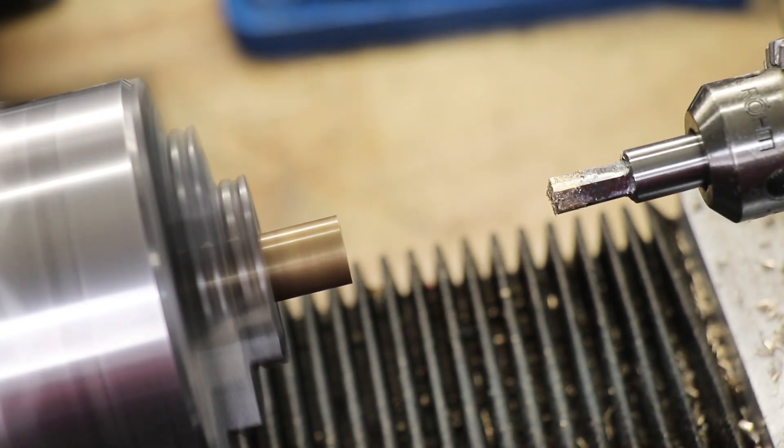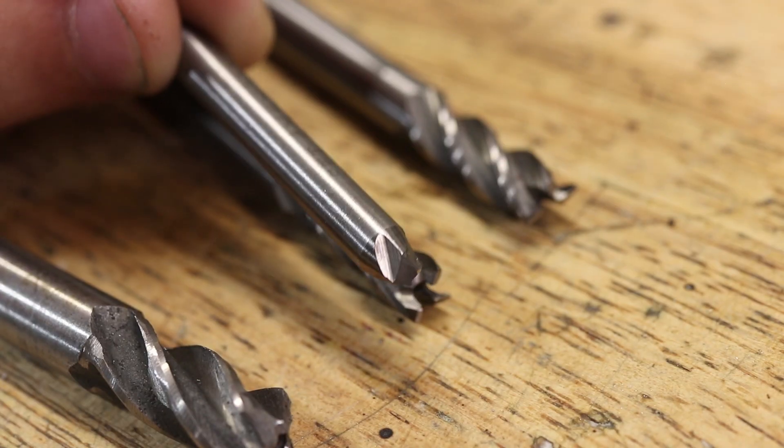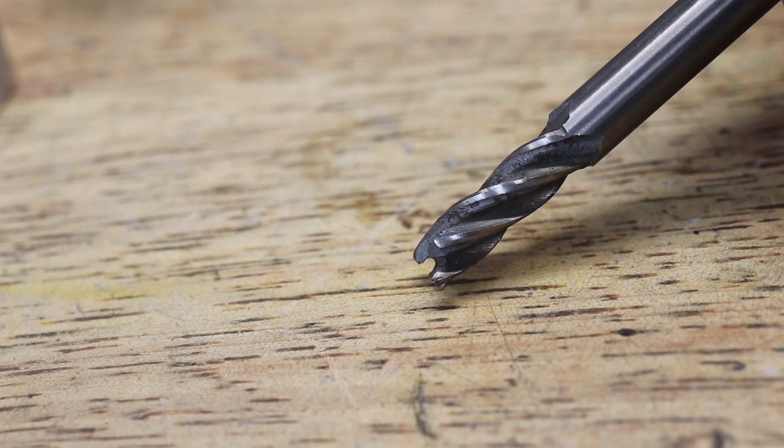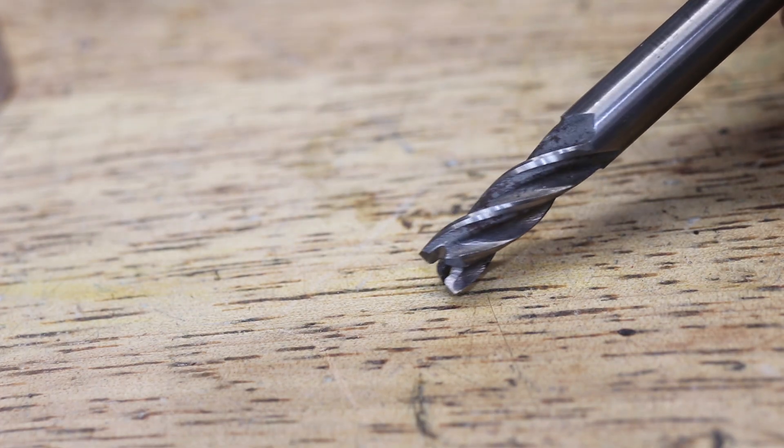So with broken end mills I'll typically sort them out as either partially damaged or completely destroyed. Partially damaged ones still have a usable chunk of the flutes left and these ones will go right back into service on the mill.